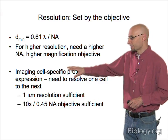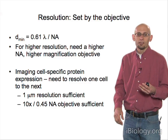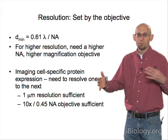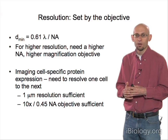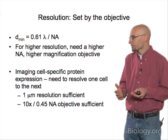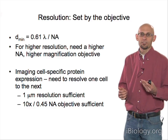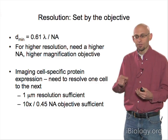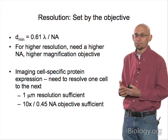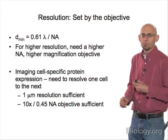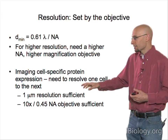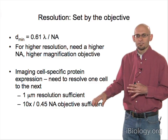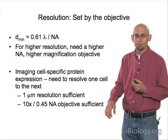To illustrate: if you're looking at cell-specific protein expression in a tissue slice — wanting to know which cells express a protein — you don't need very high resolution, just enough to separate one cell from the next. Something like 1 micron resolution might be sufficient, so a 10x 0.45 NA objective giving about 600–700 nm resolution would be adequate to see single cells without needing subcellular detail.